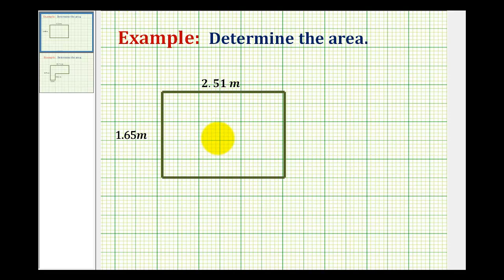We want the area of the given rectangle. The formula for the area of a rectangle is area equals length times width. So we need to determine the product of 1.65 meters and 2.51 meters.